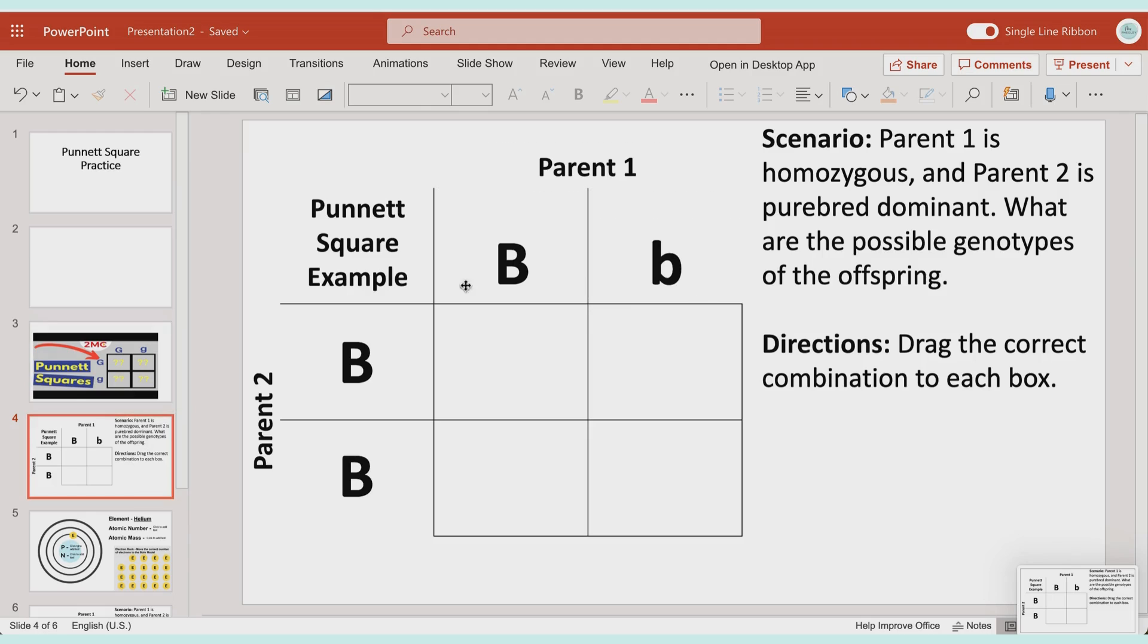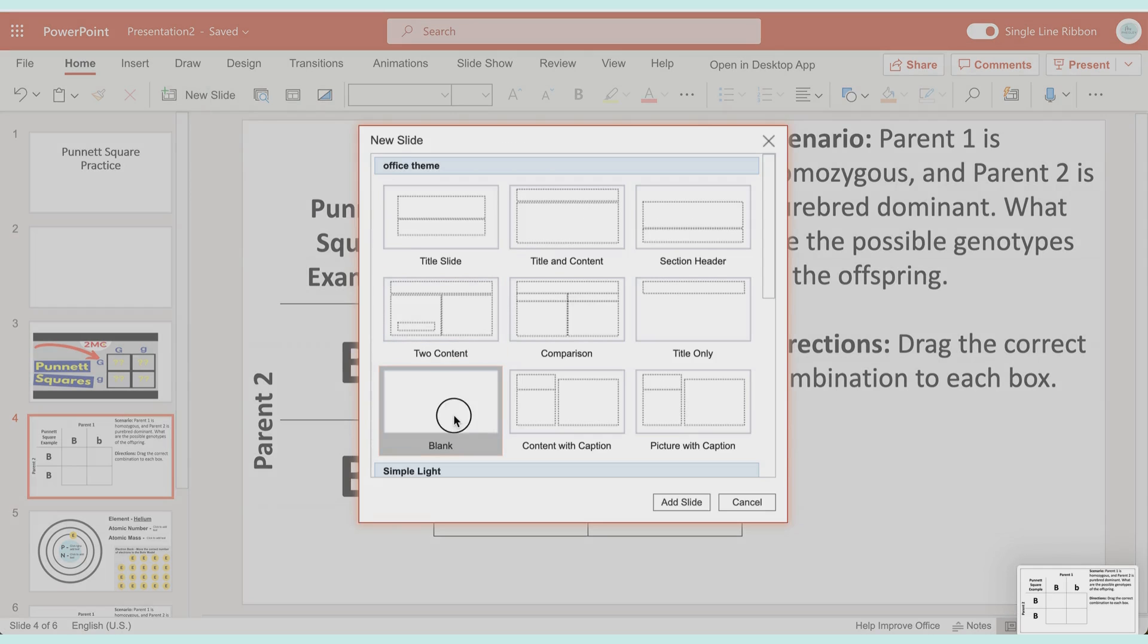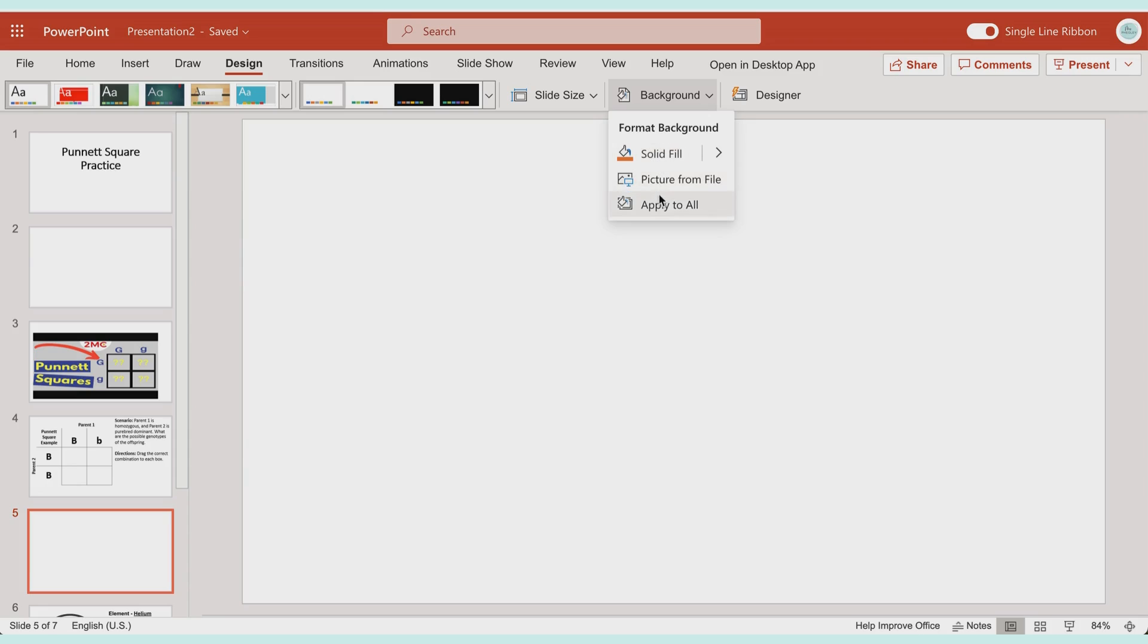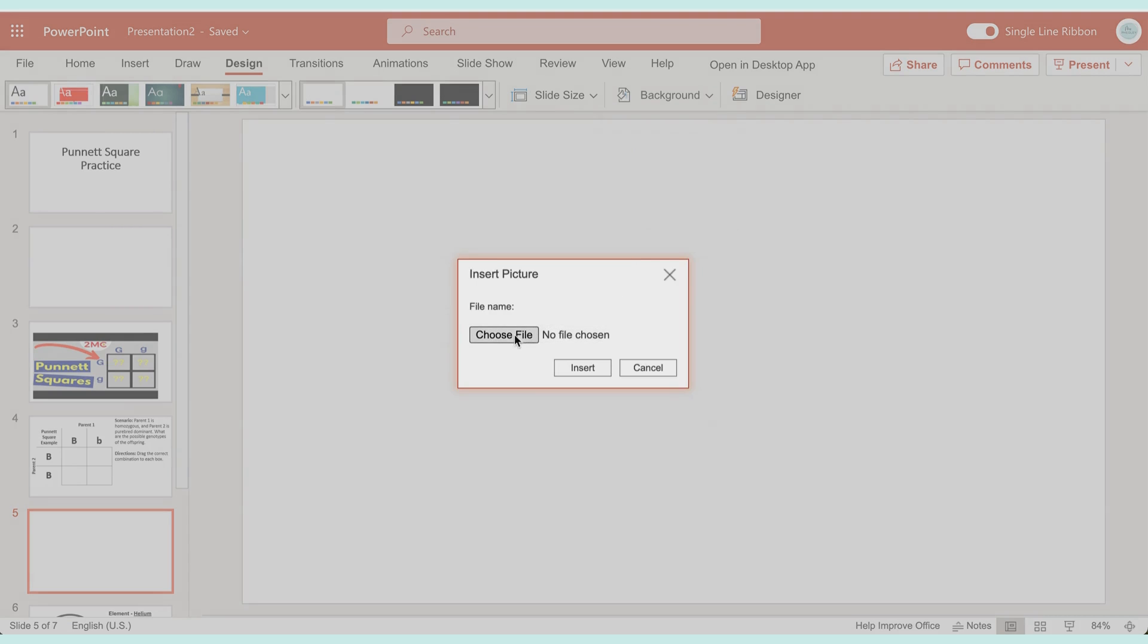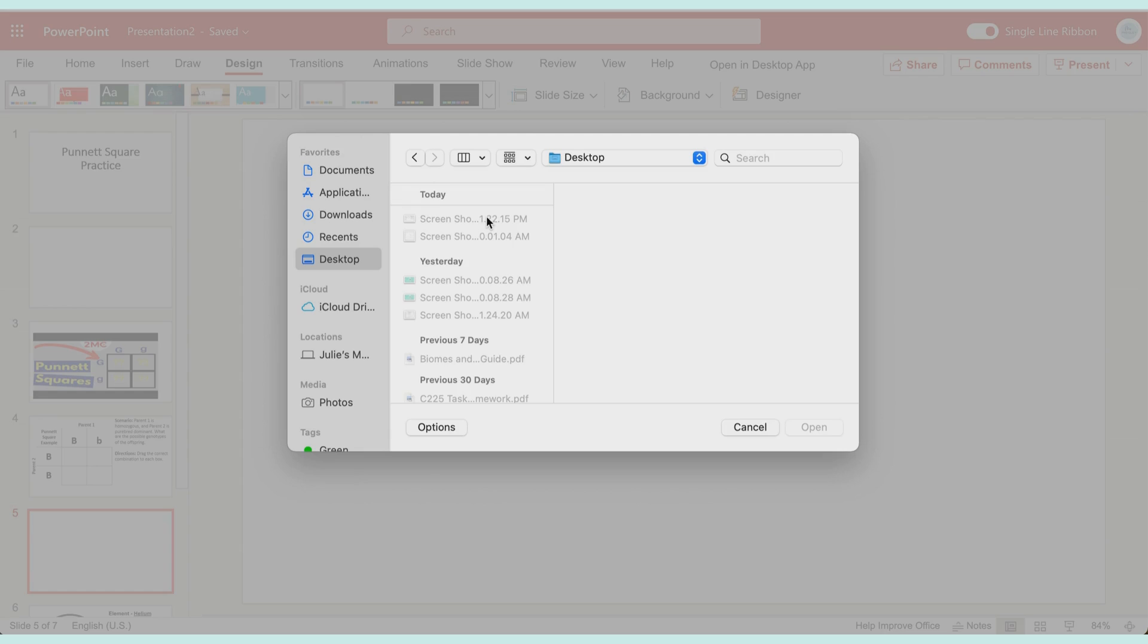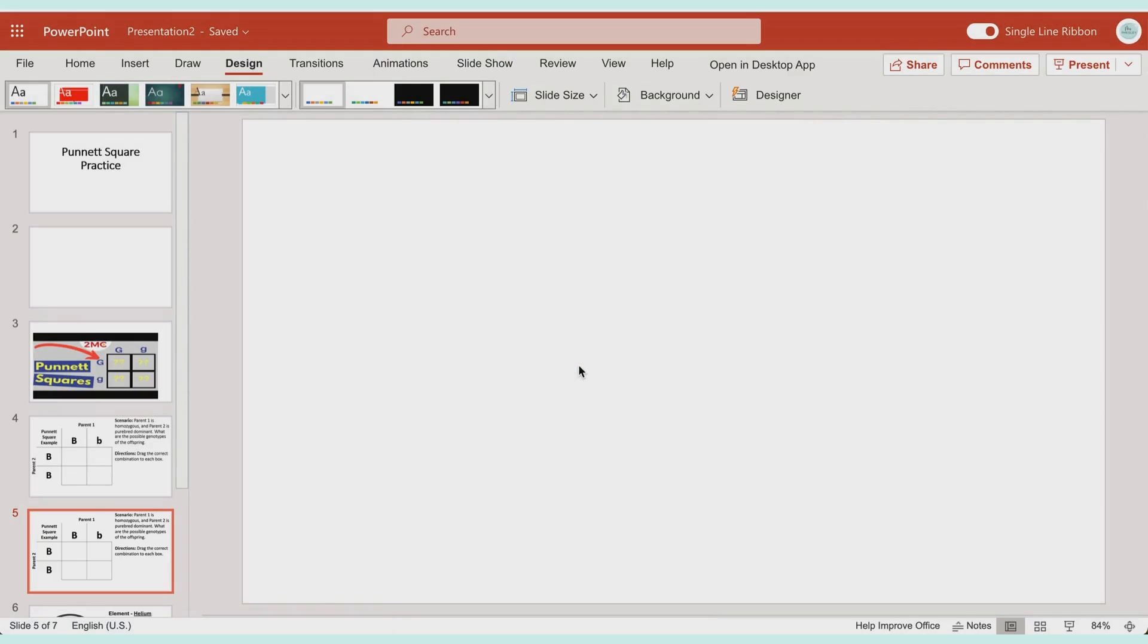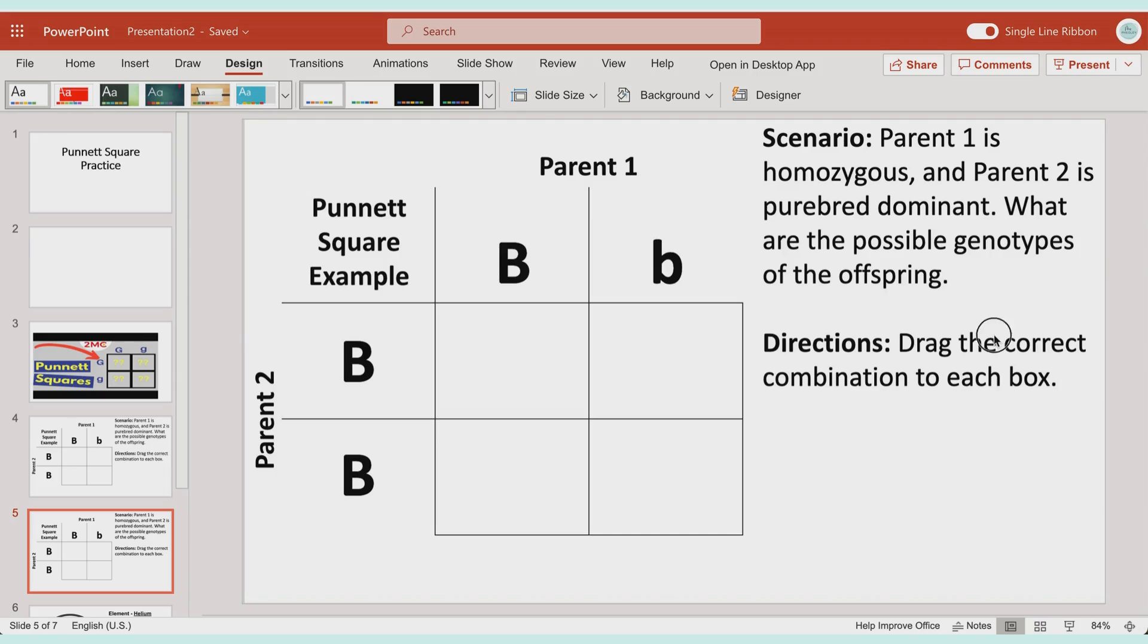So I'll add a new slide, come up here to Design, and we're going to say Background and pick a picture from file. I'm going to go to my desktop and pick that screenshot I just took. We're going to say Insert and now everything there is locked down.